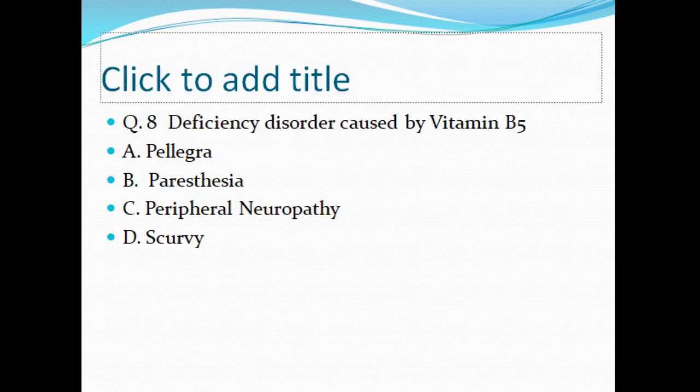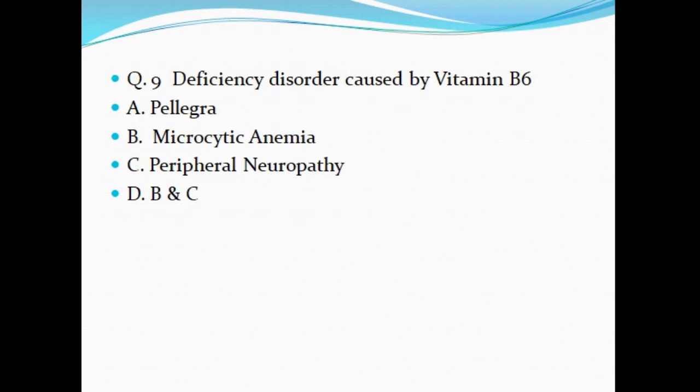Question 8: Deficiency disorder caused by Vitamin B5 — A. Pellagra, B. Paresthesia, C. Peripheral neuropathy, D. Scurvy. Question 9: Deficiency disorder caused by Vitamin B6 — A. Pellagra, B. Microcytic anemia, C. Peripheral neuropathy, D. B and C.